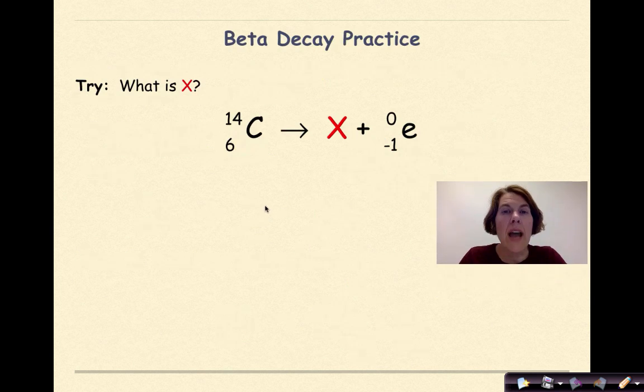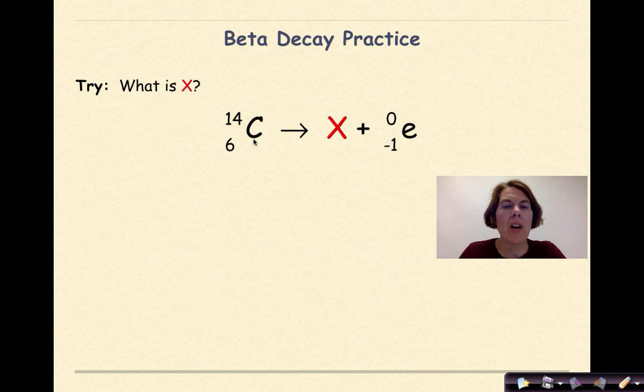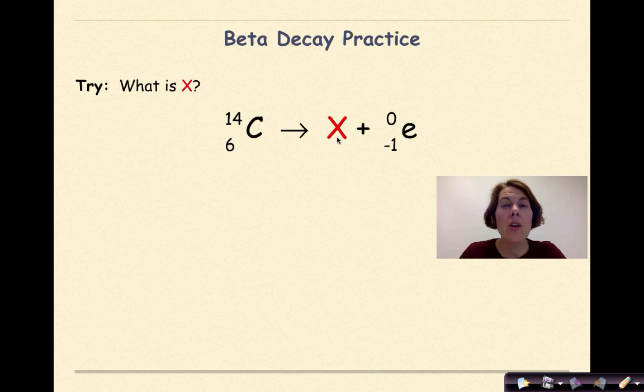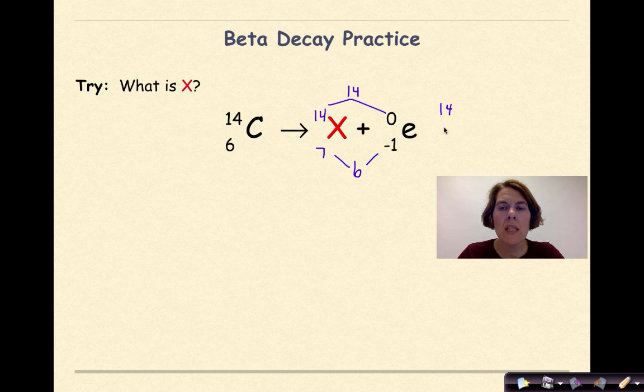Now it's your turn. What is X? I have carbon-14 undergoing beta decay. There's my beta particle right there. Take a moment, figure it out, check your work. Welcome back, let's see how you did. I know that when this undergoes beta decay, my mass number is not going to change, so this X will have a mass number of 14 because 14 plus 0 will give me 14. Again, the tricky thing here is knowing that ultimately my number on the bottom has to equal 6. So what number minus 1 will equal 6? That would be 7. So the symbol here would be 14 over 7, and we know that the element that has an atomic number of 7 is nitrogen.